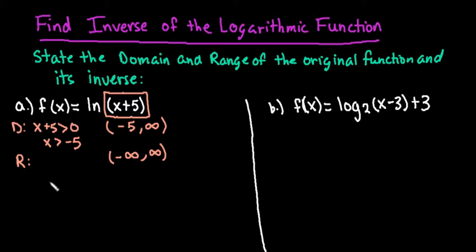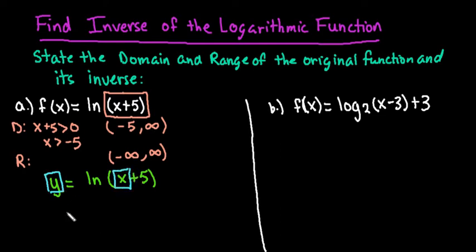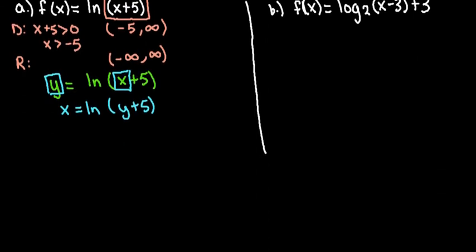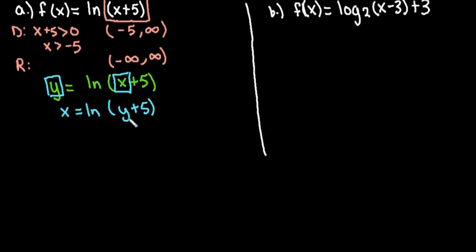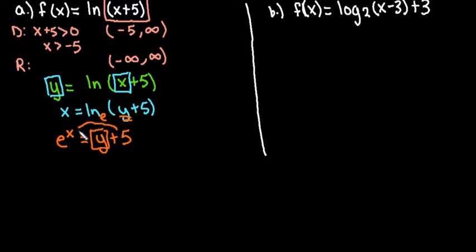Now let's find the inverse. When finding the inverse, I like to rewrite f of x as y, because it's easier to work with. Remember, an inverse switches our y and our x terms, and then we solve for y. So we say that x is equal to the natural log of y plus 5. Now we want to solve for y. We need to rewrite this in exponential form. For natural log, the base is understood to be e. So in exponential form, e to the x power equals y plus 5. Then we move the 5 to the other side: e to the x minus 5 equals y.